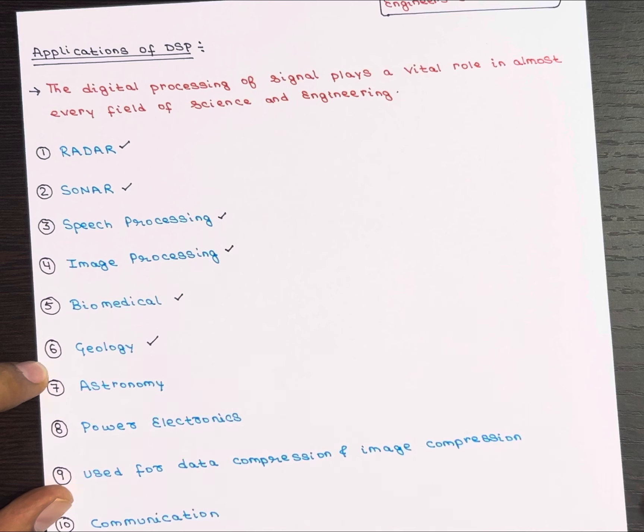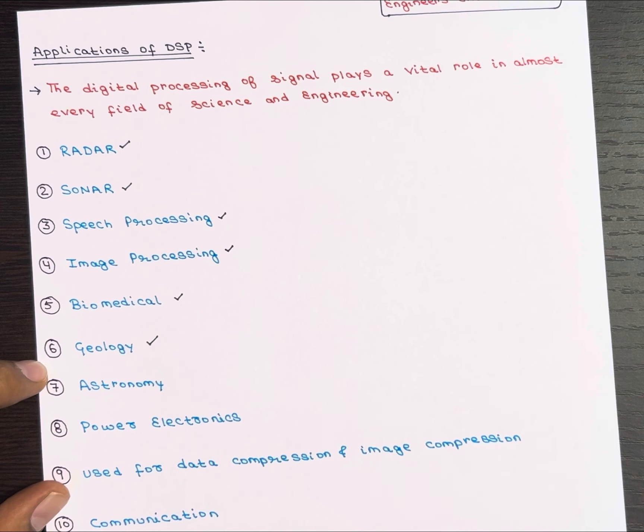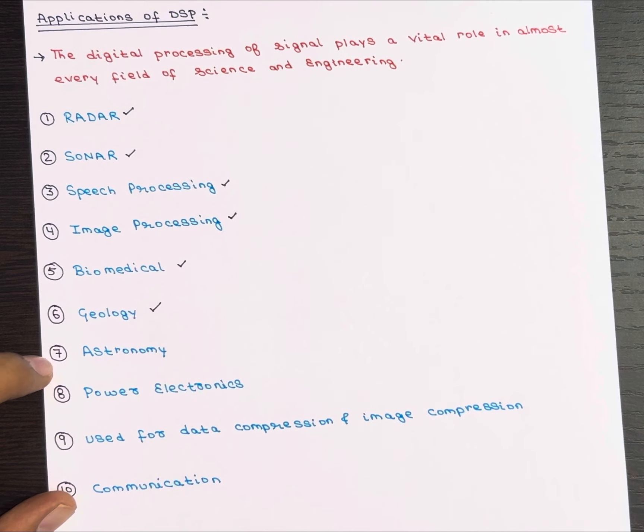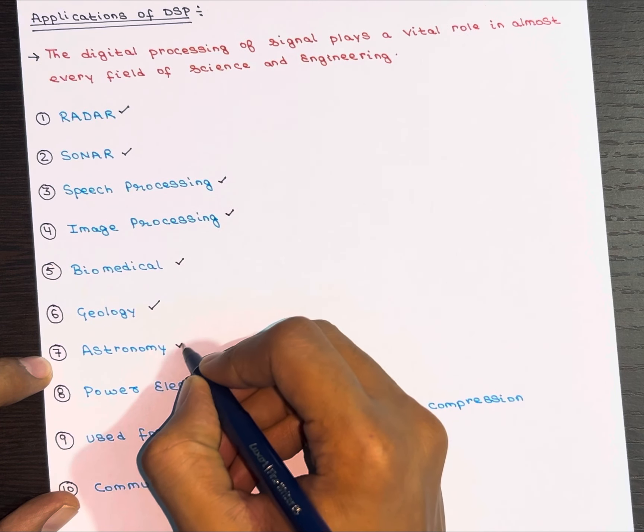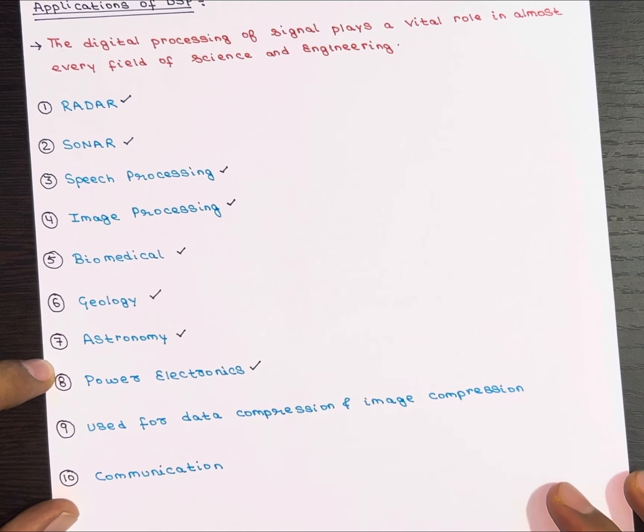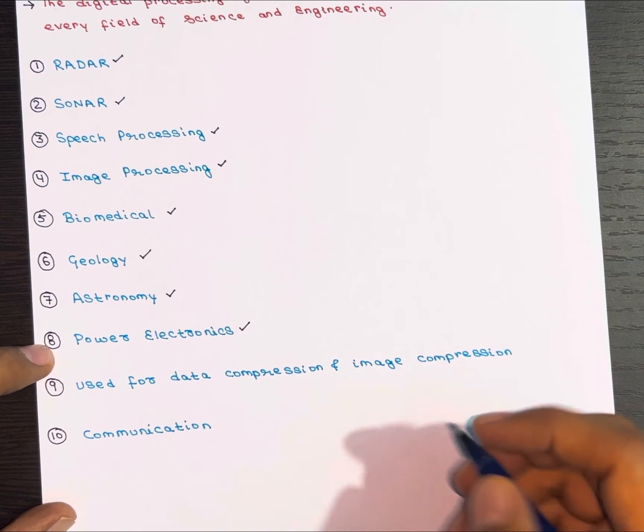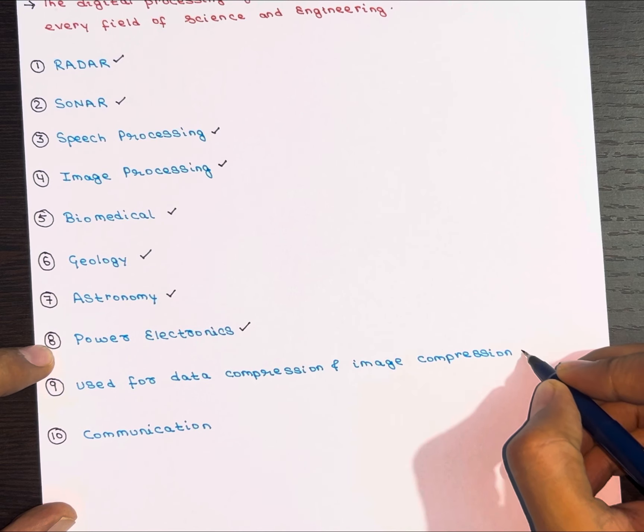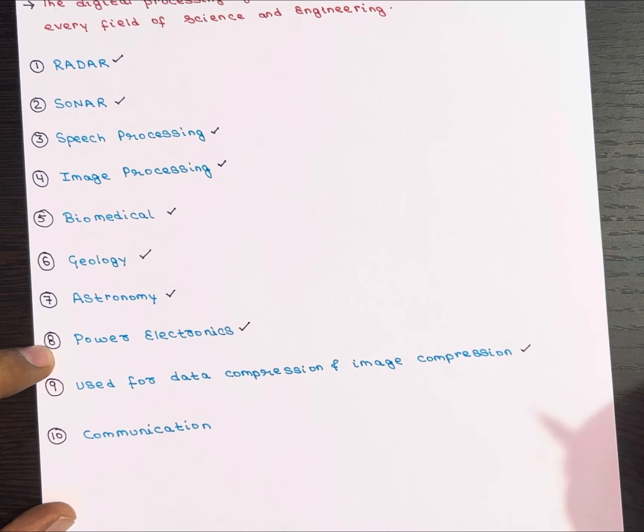Now next in the field of geology, seismic signals are processed digitally to determine earthquake and volcanic eruption magnitudes. They can even be used to predict nuclear explosions. Next it is used in astronomy fields and then in power electronics fields. It is also used for data compression and image compression, which makes it easier to store on DVDs.